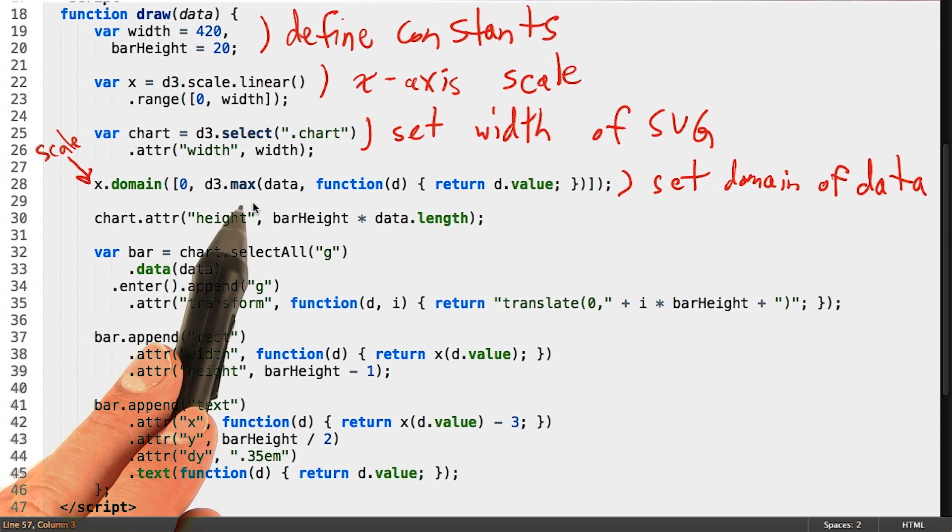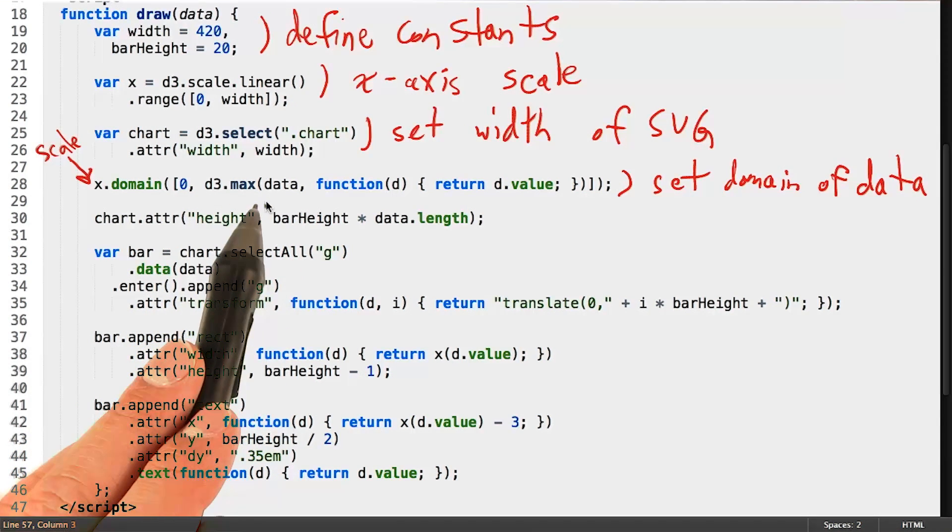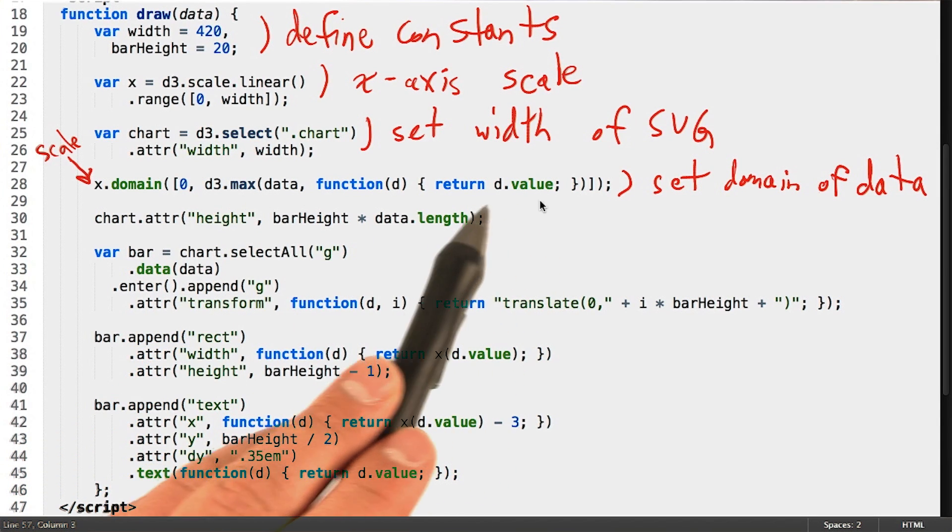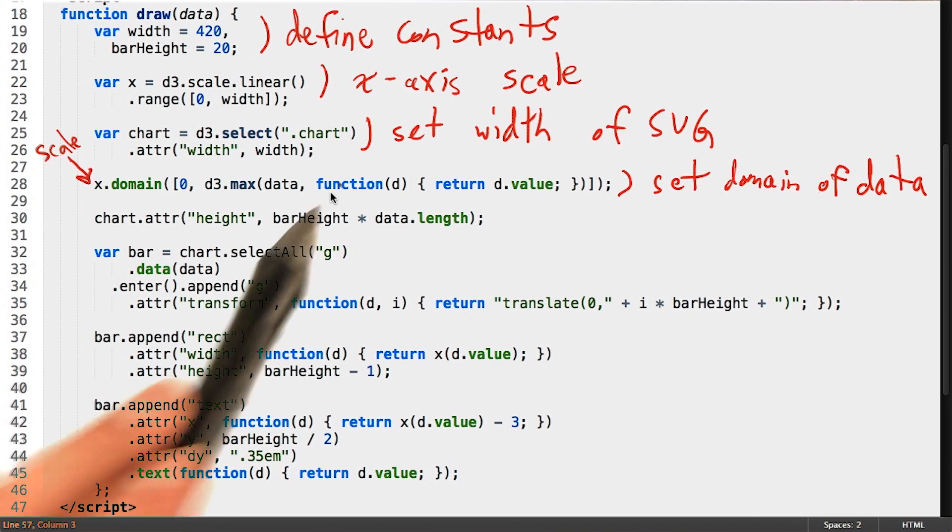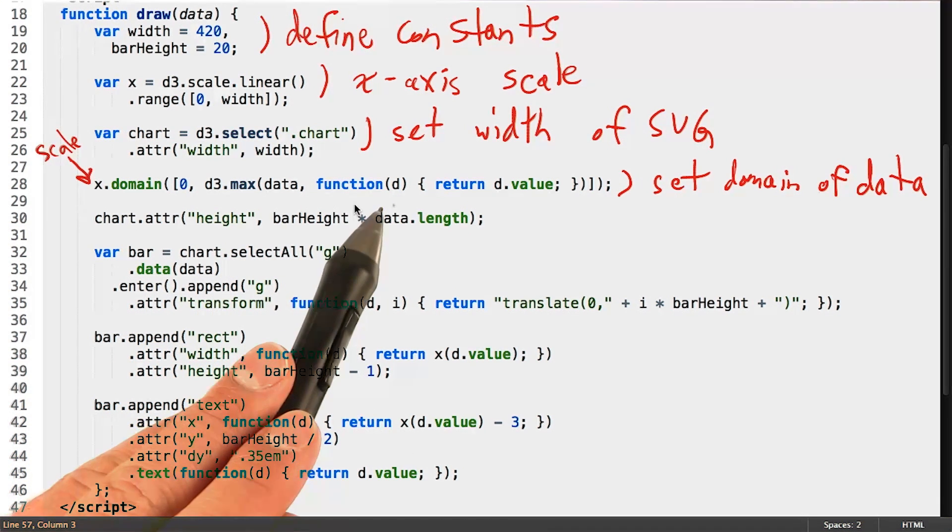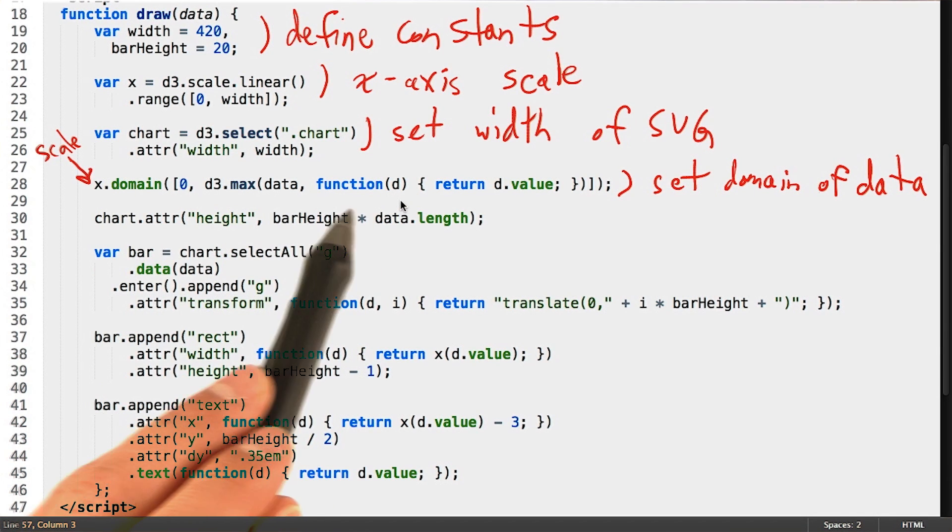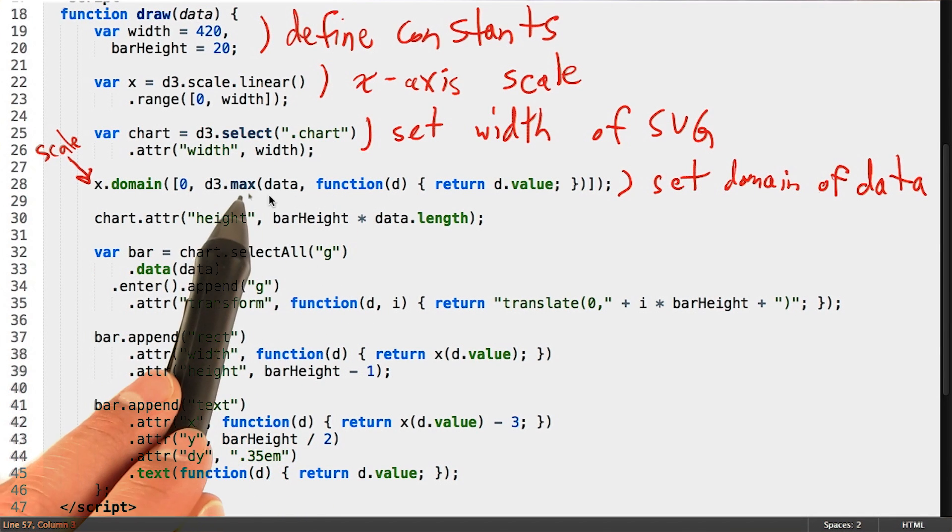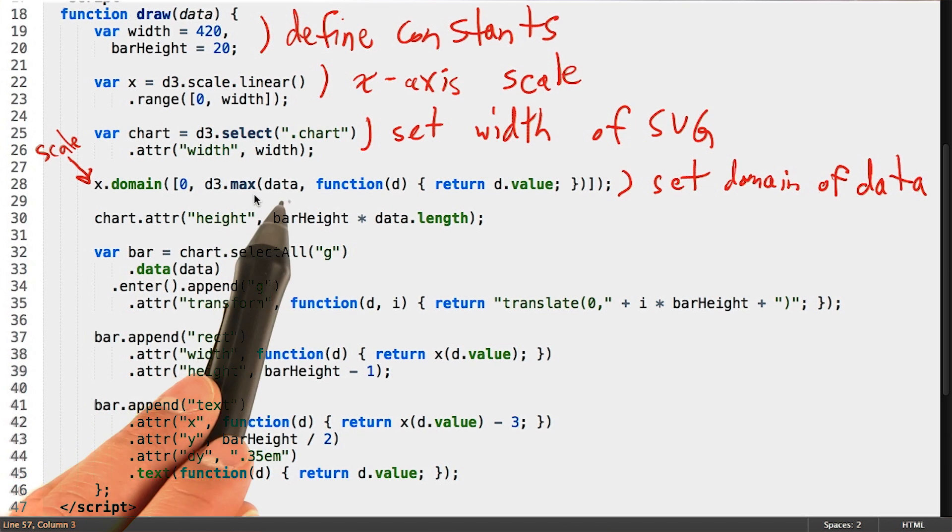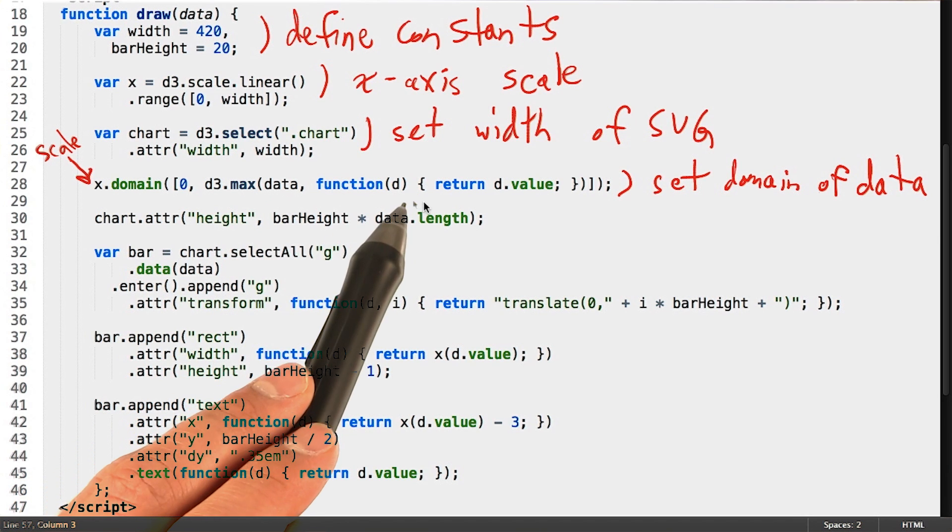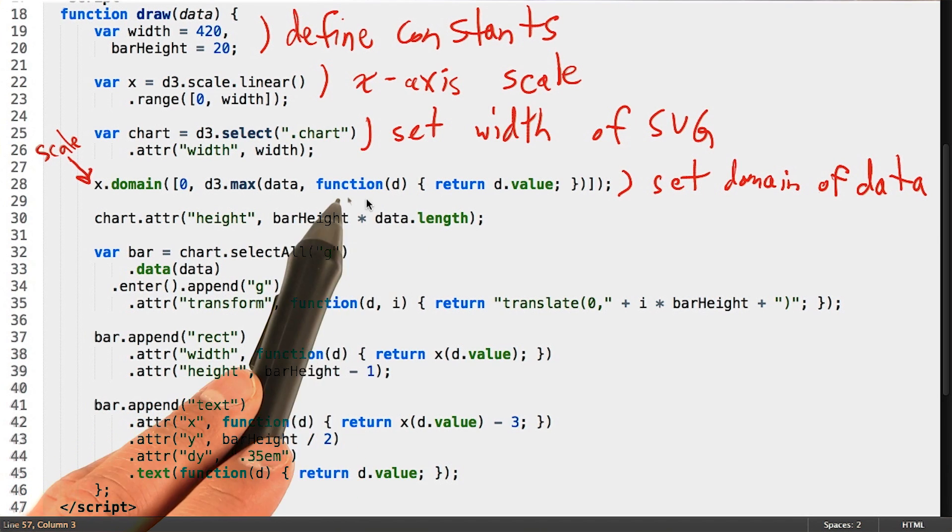The d3 max function takes our data as the first argument and a function to call on that data as a second argument. Notice here that the function takes a single argument d. What gets passed to this function is actually every datum, so a single piece of data, from our data array. And the function gets executed once for each.